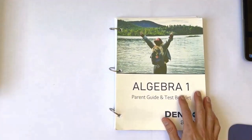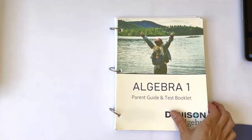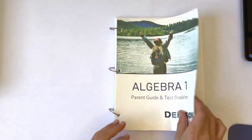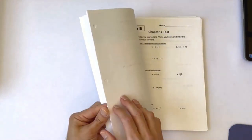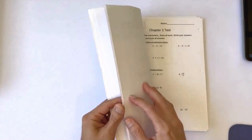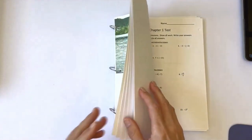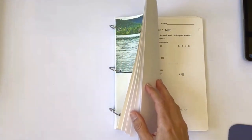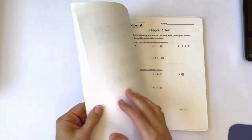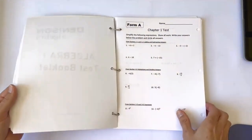The parent guide contains the chapter tests, test solutions, as well as a pacing guide, grading suggestions, a quick start guide, and a couple of my favorite recipes such as overnight oatmeal and pumpkin bars. Okay, actually I'm kidding. There are no recipes in here, although in hindsight I really should have included a couple.